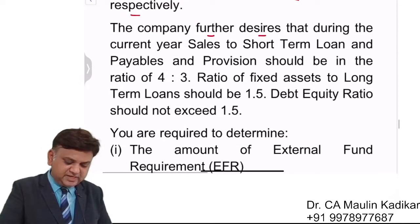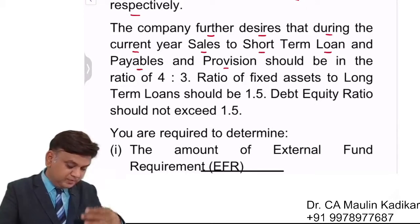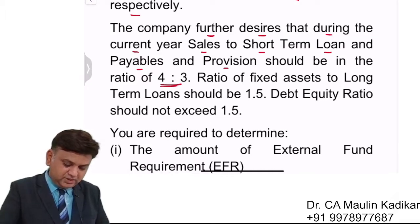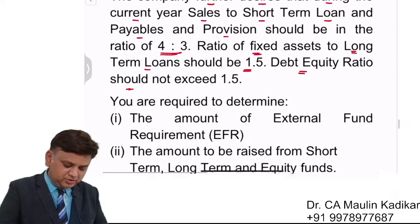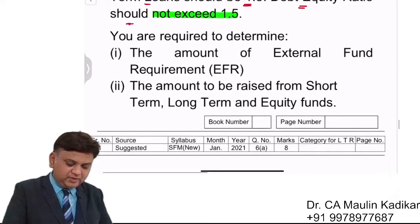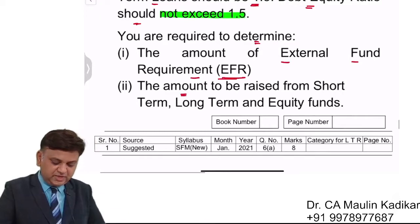The company further desires that during the current year, sales to short-term loan and payable and provisions should be in the ratio of 4:3. The ratio of fixed assets to long-term loan should be 1.5. The debt equity ratio should not exceed 1.5.